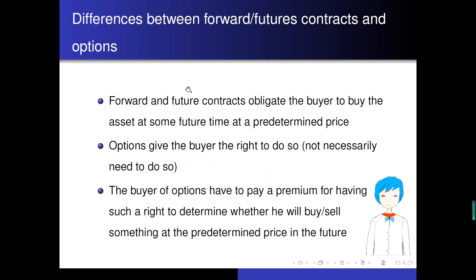One of the key differences among those three types of financial derivatives: forward and futures contracts obligate the buyer to buy the asset at some future time at a predetermined price. Options, on the other hand, give the buyer the right to buy something, or the seller the right to sell something, at some future time at a predetermined price — but the holder is not necessarily obligated to do so.